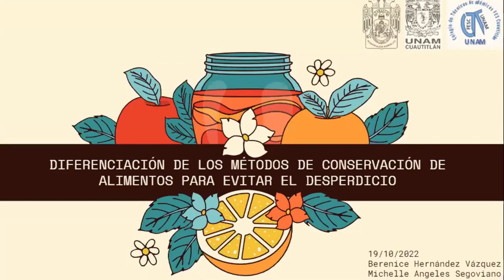Pero antes de empezar con este tema, me gustaría poner en la mesa una pregunta muy grande: cuando nosotros compramos alimentos o llevamos a nuestro hogar alimentos, ¿cuántos de esos alimentos se desperdician? Y es ahí cuando la ONU nos dice que cuando se pierden alimentos o se desperdician, también estamos malgastando los recursos utilizados para producirlos: agua, suelo, energía y sobre todo la mano de obra de quienes trabajan en el campo, pero también el dinero de los consumidores.